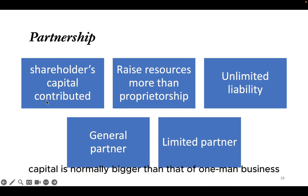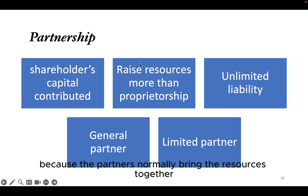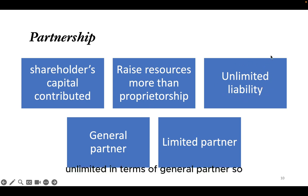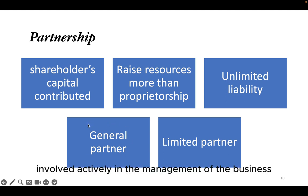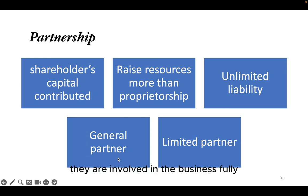For a partnership, the capital is normally bigger than a one-man business because the partners contribute the capital together. A general partner is fully involved in the management of the business, so liability is almost unlimited for them. A limited partner only contributes capital and is not actively involved in management, so their liability is only limited to their contribution to the business.